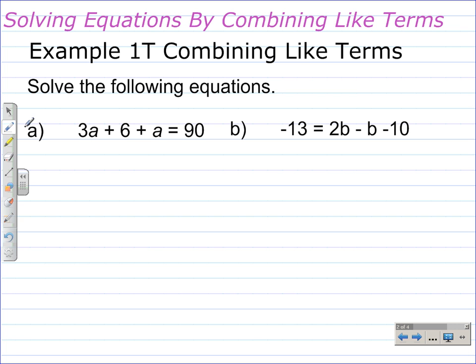In our first example, example 1T combining like terms, solve the following equations. Like terms are terms that have the same variable and the same exponent on that variable. Part A, 3a plus 6 plus a equals 90. In that equation, 3a and a are like terms. They are on the left of the equal sign. We can rearrange this, writing this as 3a plus a plus 6 equals 90. From here, we combine these like terms. 3a plus 1a equals 4a plus 6 equals 90.